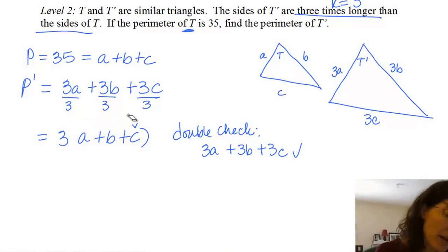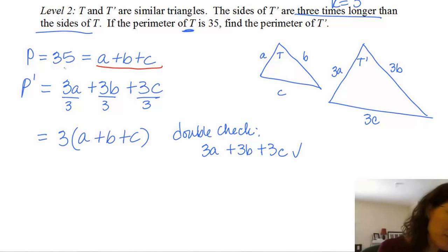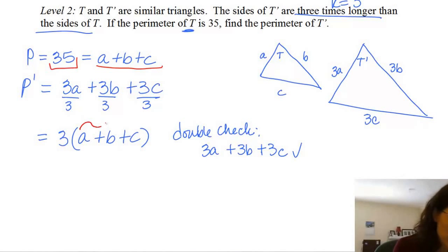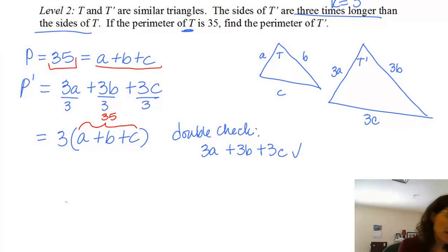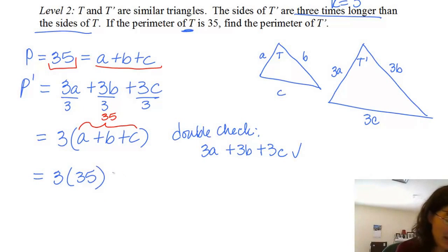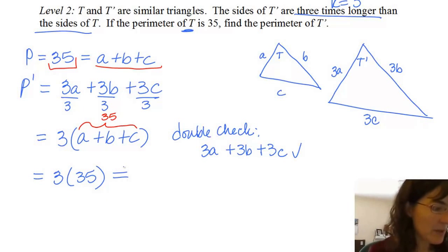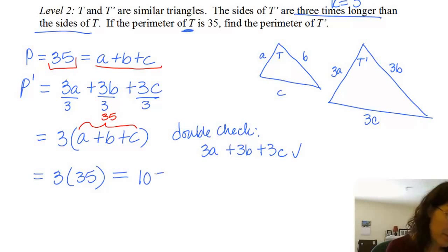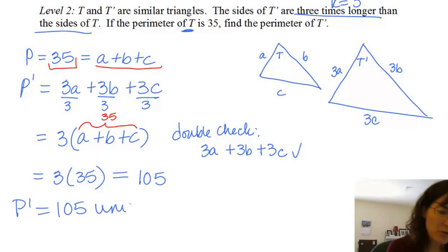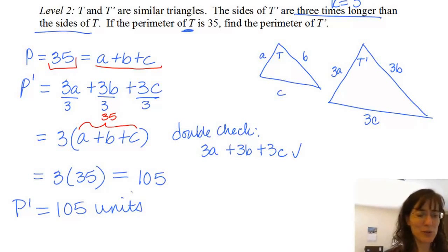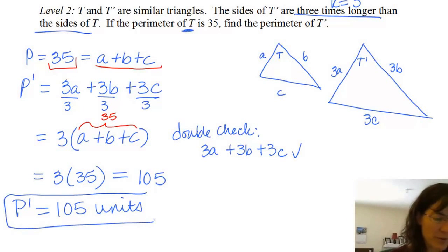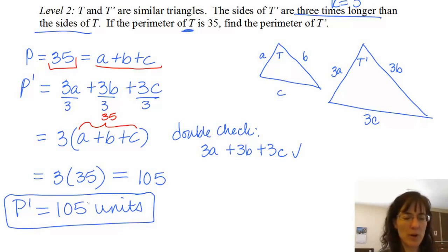Now that I have it in factored form, I see that a plus b plus c is the same thing as 35. So instead of a plus b plus c, I can just write 35, giving me 3 times 35. And that gives me 105. Because I'm talking about perimeter, I'm talking about units, not units squared. There are no units shown, so I'll just use the word units. The perimeter of triangle t prime is 105 units.